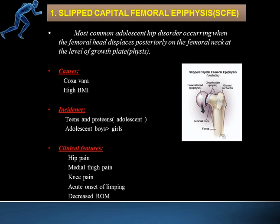So how do you define slipped capital femoral epiphysis? It is the most common adolescent hip disorder, occurring when the femoral head displaces posteriorly on the femoral neck at the level of the growth plate. The femoral head displaces in the posterior direction relative to the femoral neck, at the level of the growth plate.